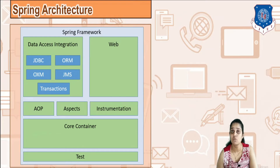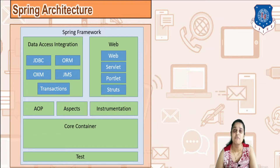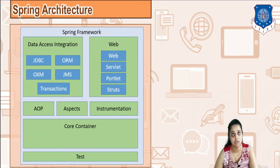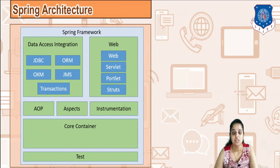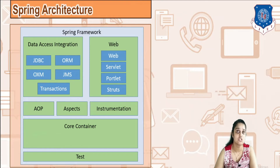We shall now move on to Web. Web is divided into 4 different paths. Web functionality covers uploading, downloading, and accessing a website. You can develop servlets and portlets here. Struts, which is also a framework in Java, is included here.